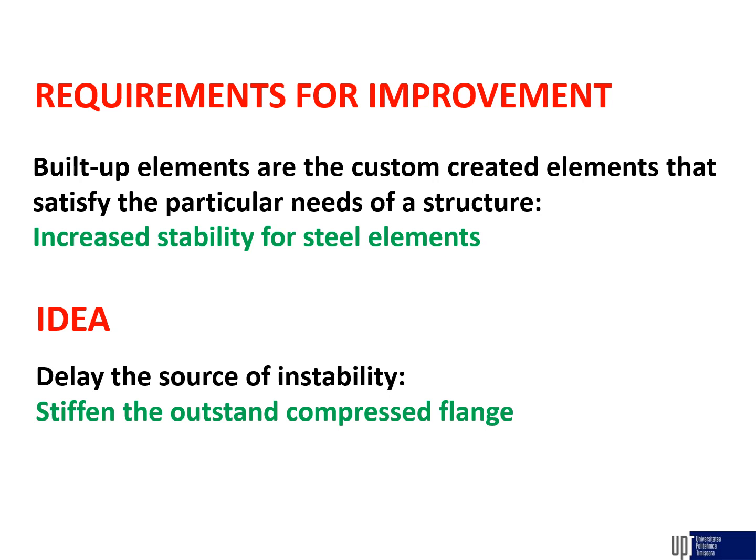Mainly, the common double-T profile for steel beams can be transformed if we stiffen the outstand compressed flange, creating in this manner a hollow flange.